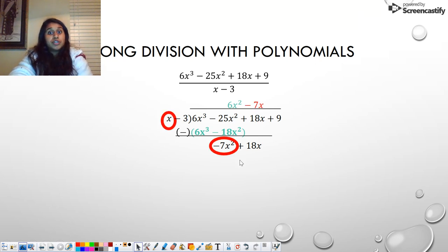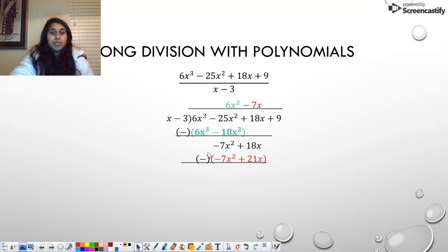Then we focus on the first terms again. How many times does x go into negative 7x squared? It goes in negative 7x times. Then I take that negative 7 and multiply it for the rest of my divisor. Negative 7 times negative 3 should give me positive 21x. We put them in parentheses, put that negative, and distribute. That cancels this out. But 18 minus 21x should get me negative 3x. And I drag down the next term.